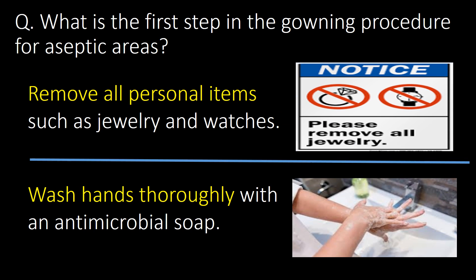What is the first step in the gowning procedure for aseptic areas? Remove all personal items such as jewelry and watches. Wash hands thoroughly with an antimicrobial soap.